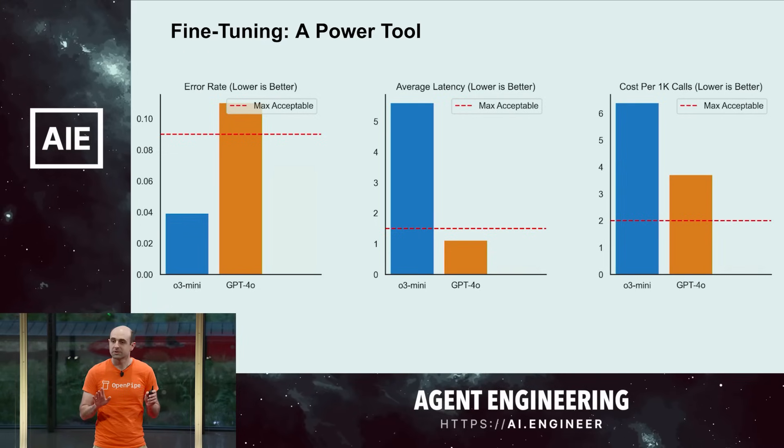Fine-tuning is a power tool. It does take more time and more engineering investment than just prompting a model. So you don't really want to do that until you've actually benchmarked the production models, just prompting them and seeing whether they work. In Method's case, and in all of our customers' cases, they found they were not able to hit the numbers they needed — and so that's the time to bring in fine-tuning.